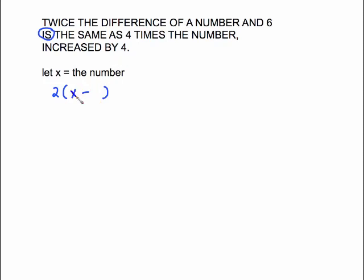The order inside here needs to be x minus 6 because the word 'number' came before you saw the word 6. 'IS,' that was our equal sign. Go to the other side. 4 times the number increased by 4. 4 times the number is 4x. Increased by is plus 4.